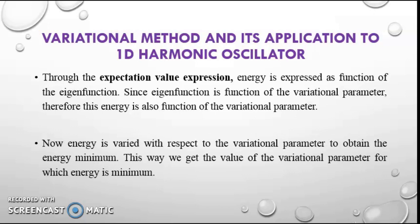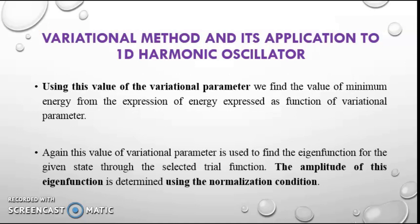Through the expectation value expression, energy is expressed as a function of the eigenfunction. Since the eigenfunction is a function of the variational parameter, this energy is also a function of the variational parameter. Energy is then varied with respect to the variational parameter to obtain the energy minimum, giving us the value of the variational parameter for which energy is minimum. Using this value, we find the minimum energy from the expression of energy as a function of the variational parameter.